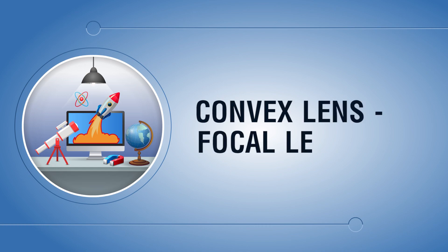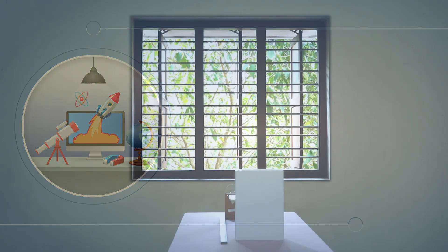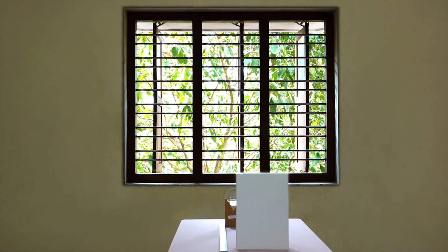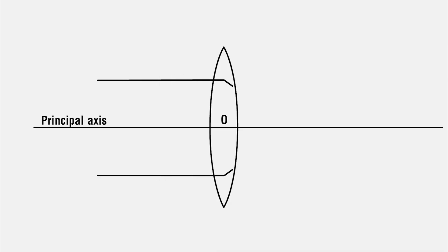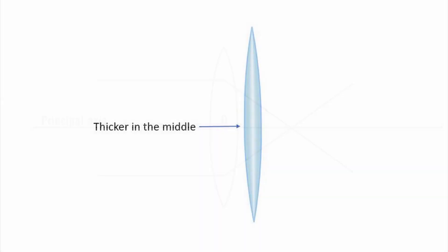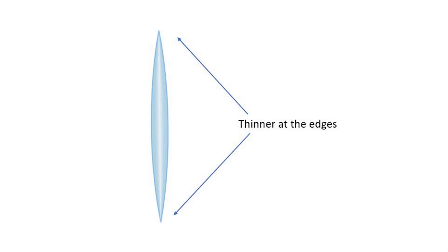Convex Lens, Focal Length. A lens that converges a beam of light incident on it is called a convex lens. Convex lenses are thicker in the middle and thinner at the edges.